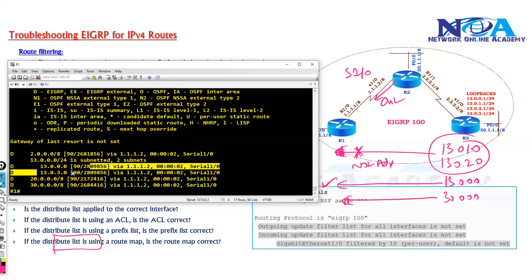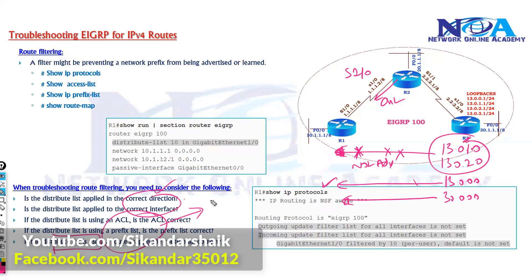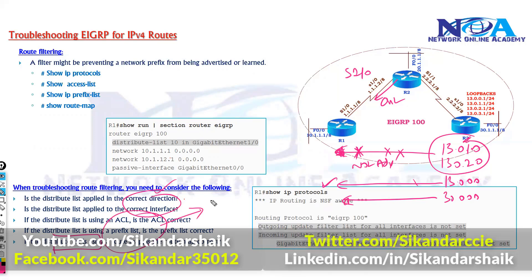The first two routes are still not received because those are intentionally denied per the company's requirement. If additional routes also need to be filtered, you add them to the prefix list. When implementing route filtering, we must ensure it is applied in the right direction, on the right interface, and that the ACL, prefix list, or route map is properly configured — otherwise routes will not be advertised to specific neighbors.